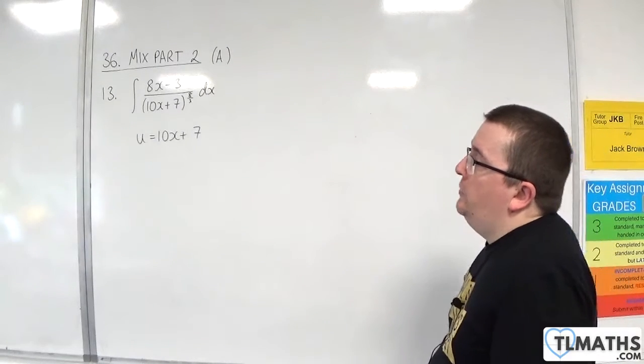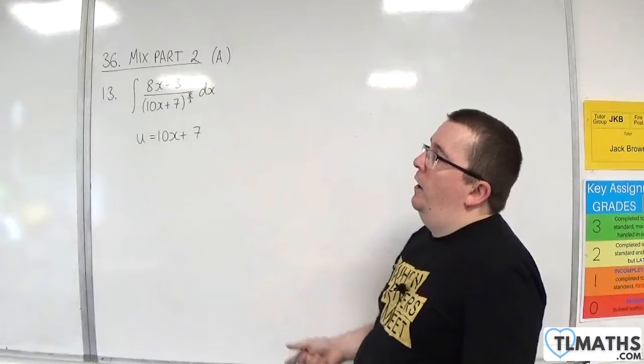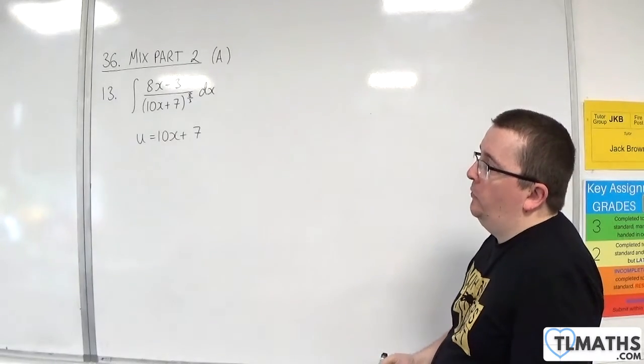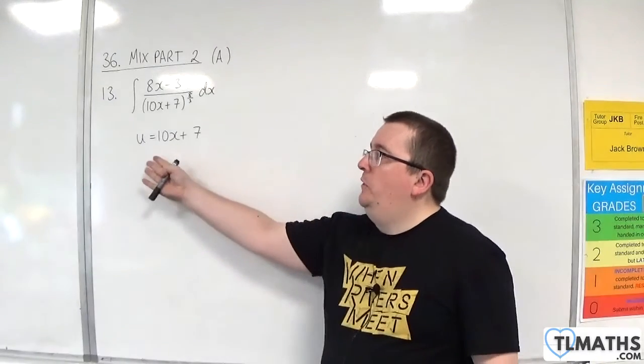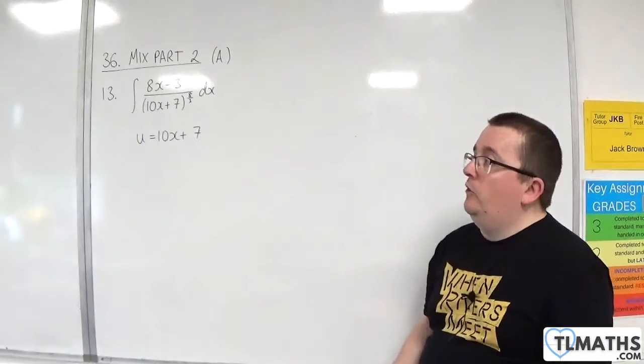This is number 13. Integrate 8x take away 3 over 10x plus 7 to the 8 thirds with respect to x, and we've been told to use the substitution u is equal to 10x plus 7.